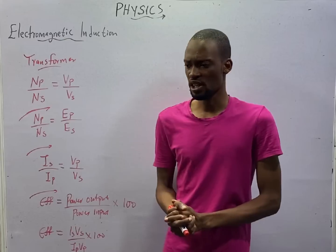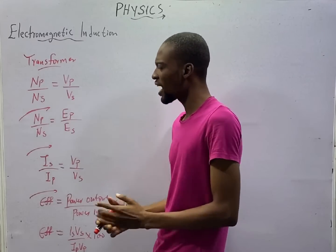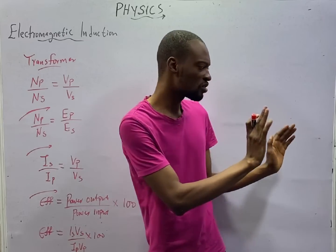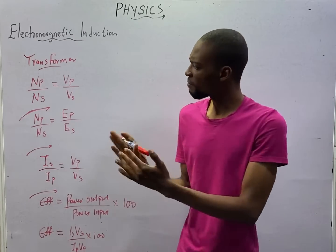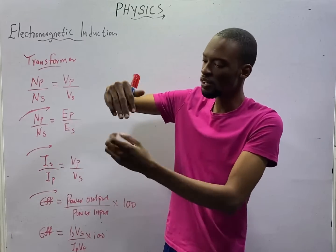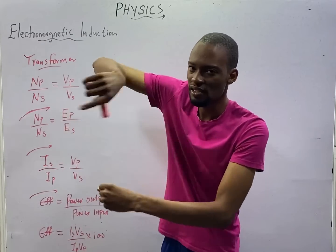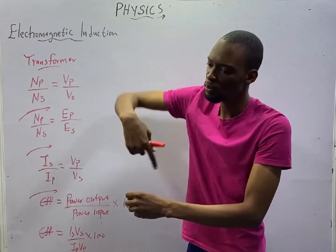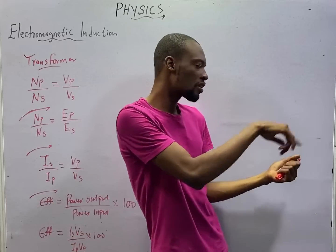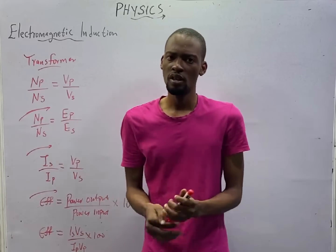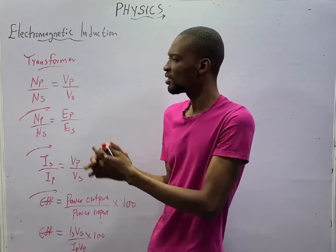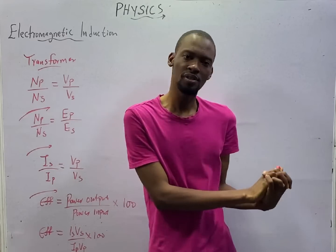When it comes to transformer, we have the primary side and the secondary side. In the primary side, we have the number of turns of the coil — there is a coil winding in a transformer, that is the loop or number of turns. On the other side of the transformer, which is the output, we also have a coil. We don't expect the number of turns in the primary to be equal to the number of turns in the secondary.